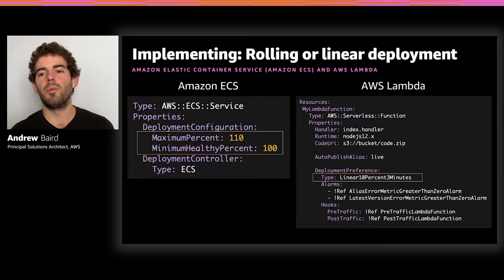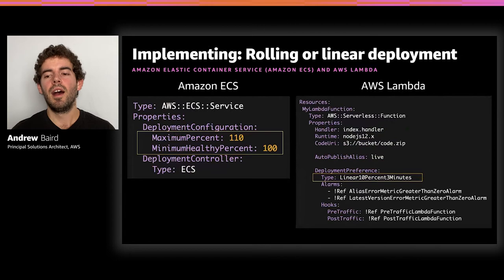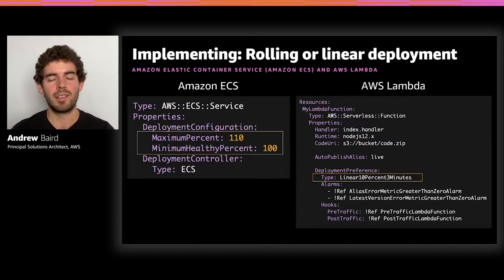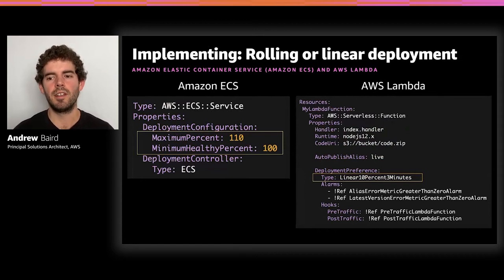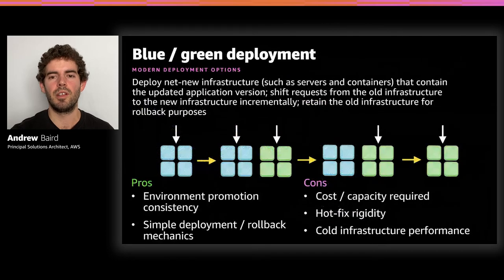If you're running serverlessly and want a rolling or linear deployment, there's a 'Deployment Preference' property available for your Lambda function where you define the type. There are specific named types of deployment preference — one is a linear option where you define the percentage and time interval. For example, shift an additional 10% of traffic to the new Lambda function alias every three minutes: 10% at three minutes, 20% at six minutes, and so on until you reach 100%. You've got rolling deployment options across all three paradigms: servers, containers, and serverless.